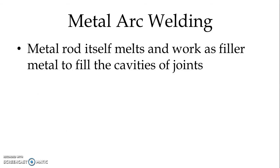In case of metal arc welding, the metal rod itself melts and works as a filler to fill the cavities of the joint. The metal rod is made positive and the work piece is made negative. Arc is generated, heat is produced, and the metal rod itself is a consumable electrode that also works as a filler. Supply might be AC or DC.